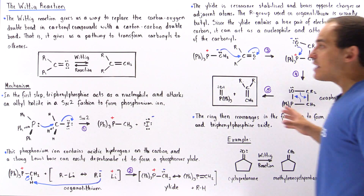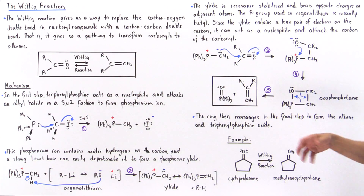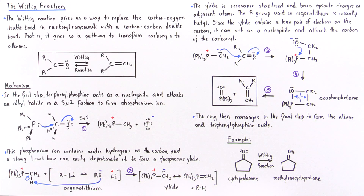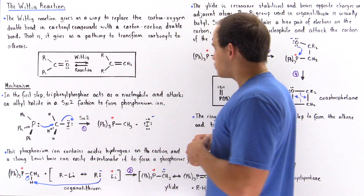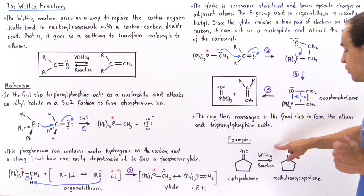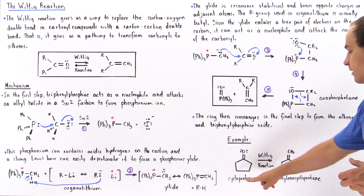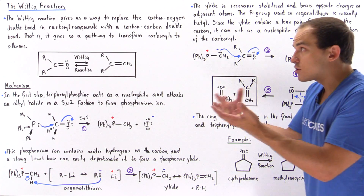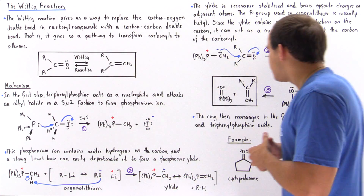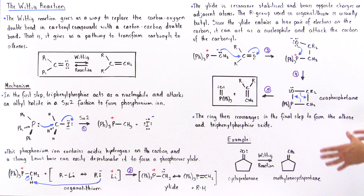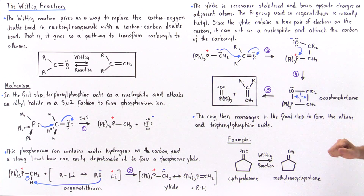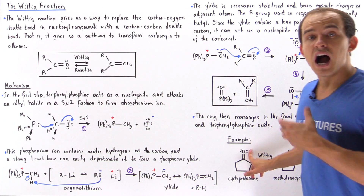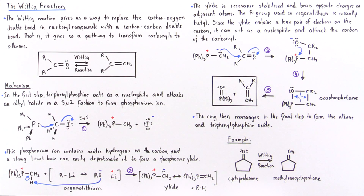The entire reaction is driven by the thermodynamic stability of these two products. A particular example of the Wittig reaction is transforming cyclopentanone into methylenecyclopentane. Before the Wittig reaction, there was no straightforward way to form this product selectively, but the Wittig reaction produces only one product — replacing the carbon-oxygen double bond with a carbon-carbon double bond.